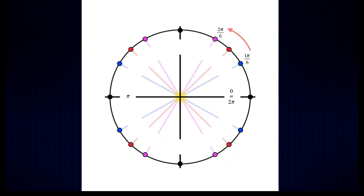our next angle would be two pi over six, and then three pi over six, four pi over six, five pi over six, six pi over six, seven pi over six, eight pi over six, nine pi over six, ten pi over six, eleven pi over six, and finally twelve pi over six.